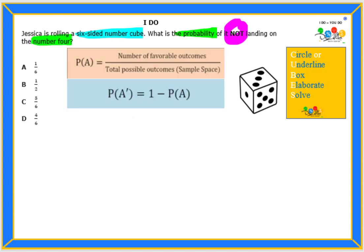When we are talking about probability, we're talking about the number of favorable outcomes over the total possible outcomes for the sample space. Now when we talk about not landing on the number four, we are talking about the complement. And the complement is one minus the probability of an event happening.